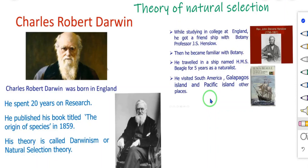Darwin published his observations and conclusions under the name 'Origin of Species' in 1859. This book demonstrated the fact of evolution and elaborated on the theory of natural selection for evolutionary transformation.